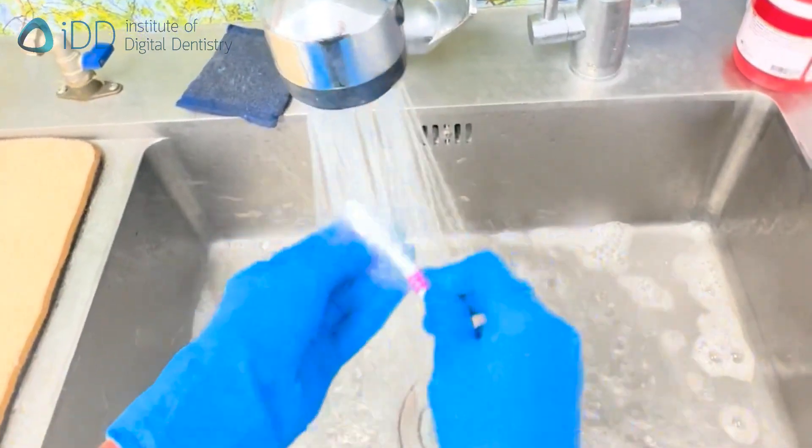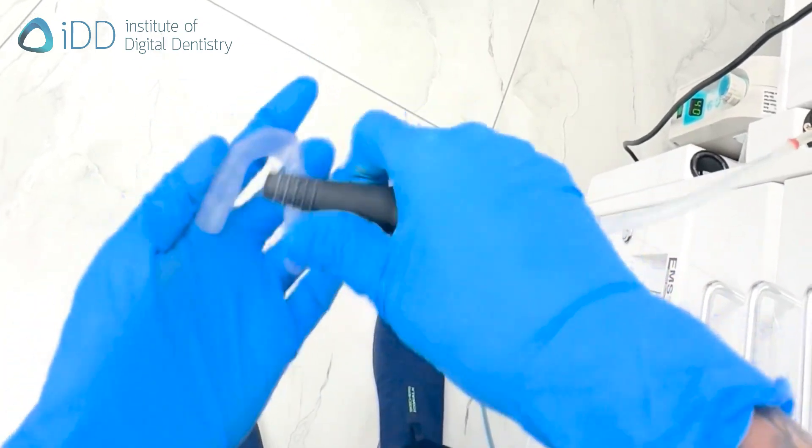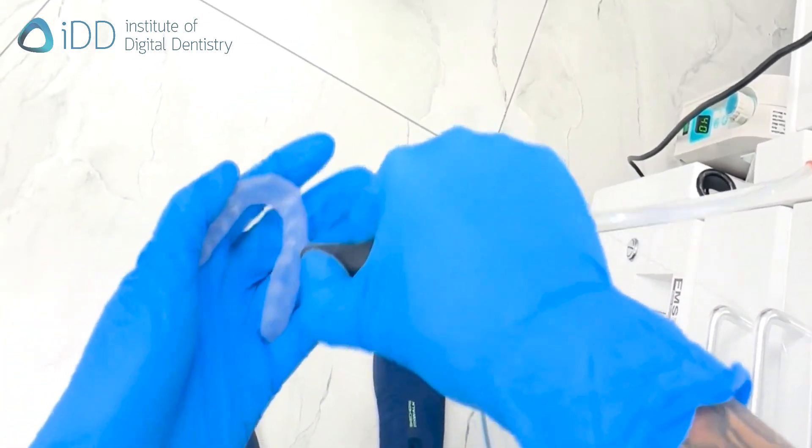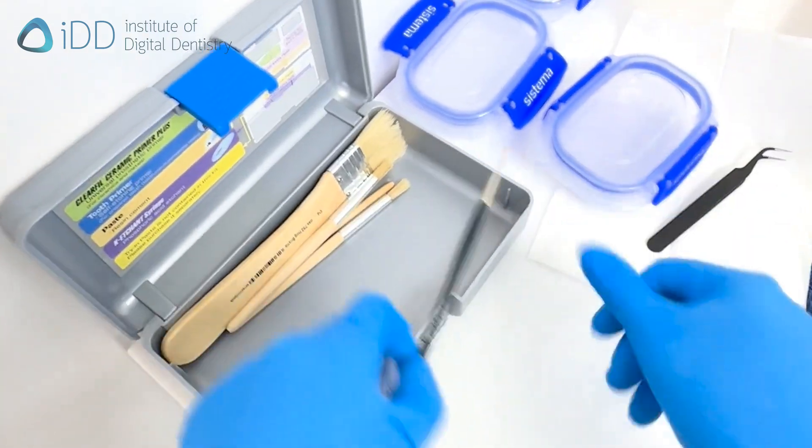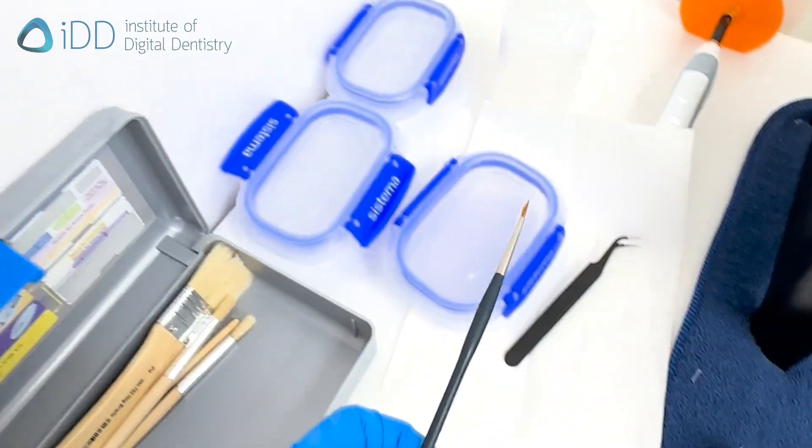After polishing, wash the splint under running water. Dry it well and now we can start the candy coating technique. You'll need a container with the same resin that was used to print the splint and a brush to apply this resin again to the surface.